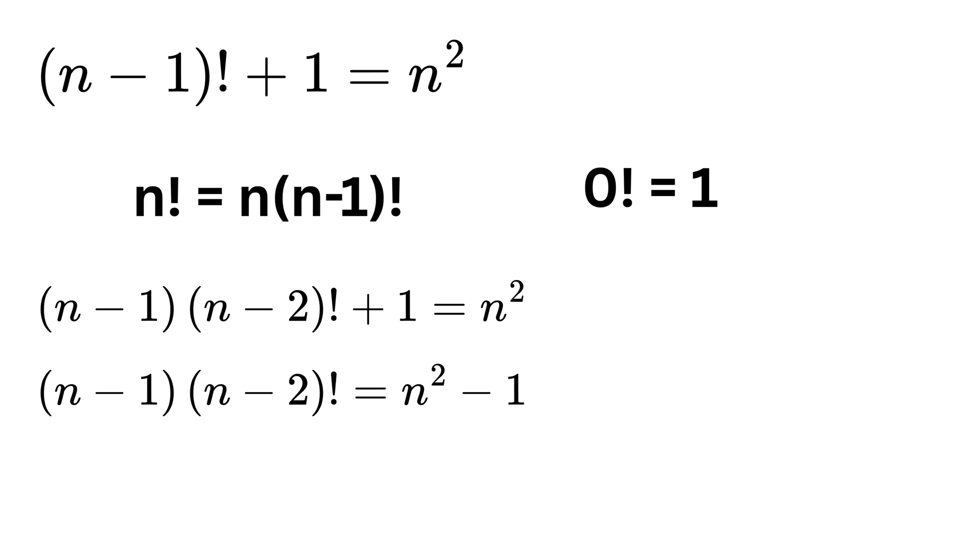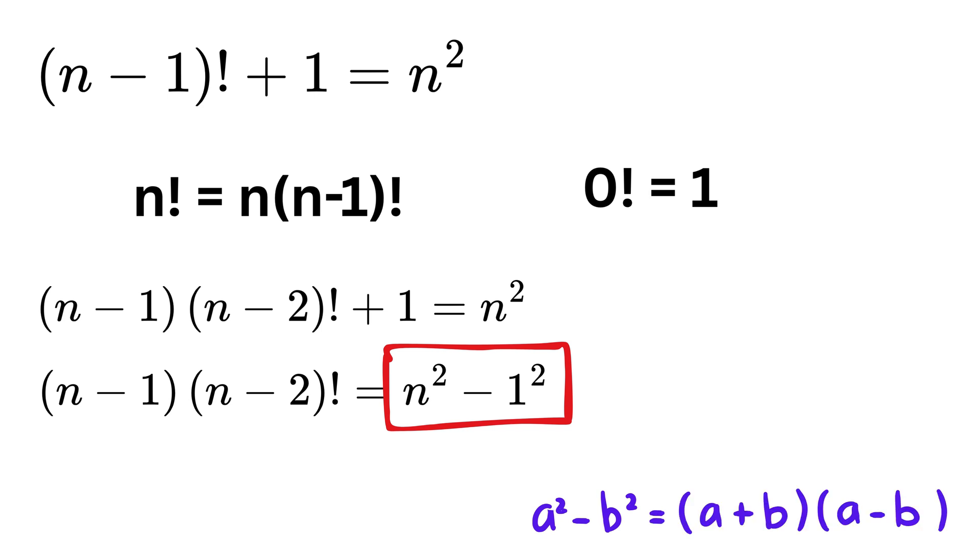Now, here comes the magic. This one can also be written as 1 square. So this right-hand side is of the form a square minus b square, which we all know is equal to a minus b times a plus b. Therefore, this will become n minus 1 times n plus 1.